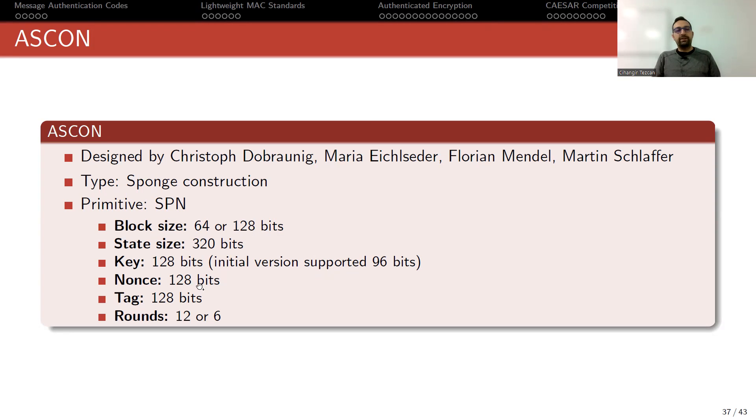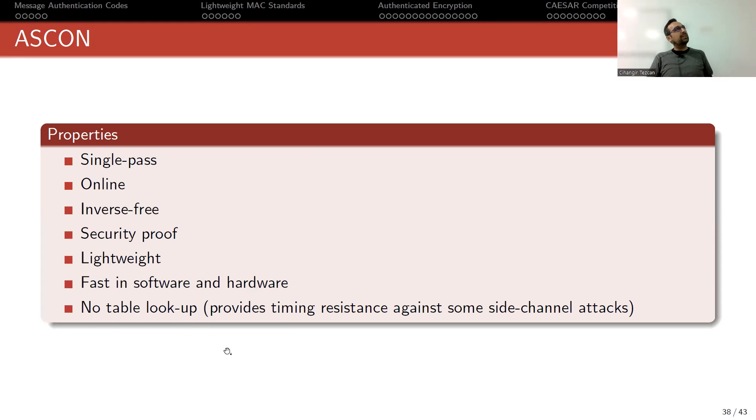Nonce is also 128 bits, tag is 128 bits which we want to produce at the end, and the number of rounds depends on the operation you use. Generally, it is either 12 or 6.